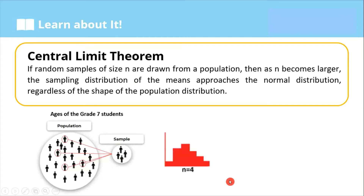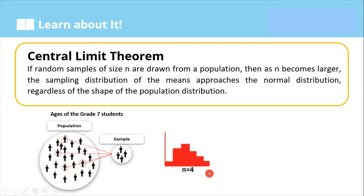When you draw or make a histogram of this sample, it forms like this. Looking at this, you notice that there is no definite distribution and the spread is way large. So the distribution is nowhere close to a normal distribution, since one of the properties of a normal distribution is that the normal curve tends to have a bell curve.